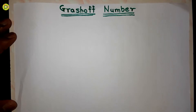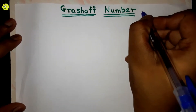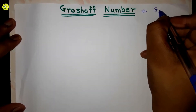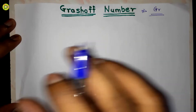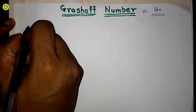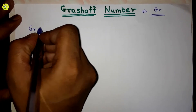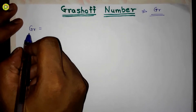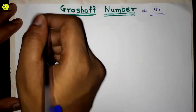Welcome students. In this video we are going to understand the Grashof number. The Grashof number is denoted by Gr — capital G, small r. The Grashof number is a dimensionless quantity and it is a ratio of forces.